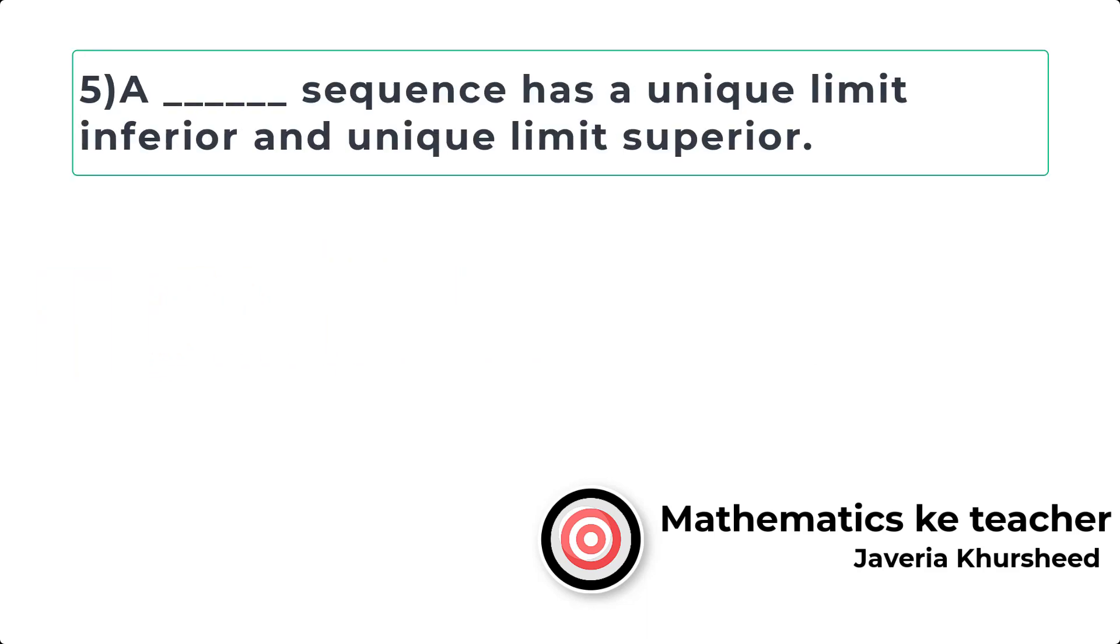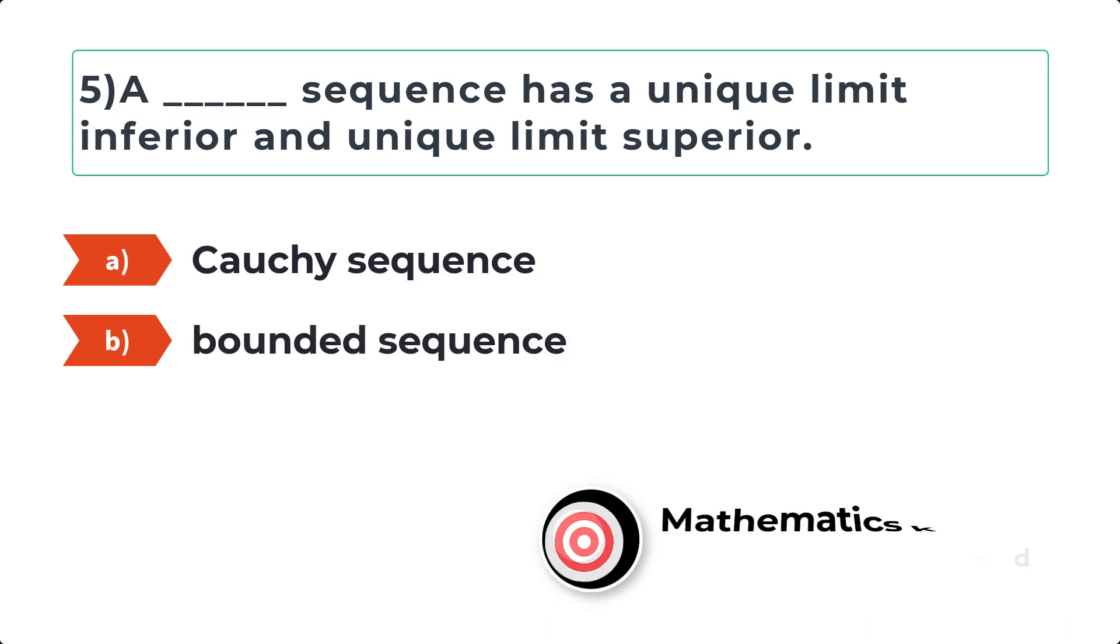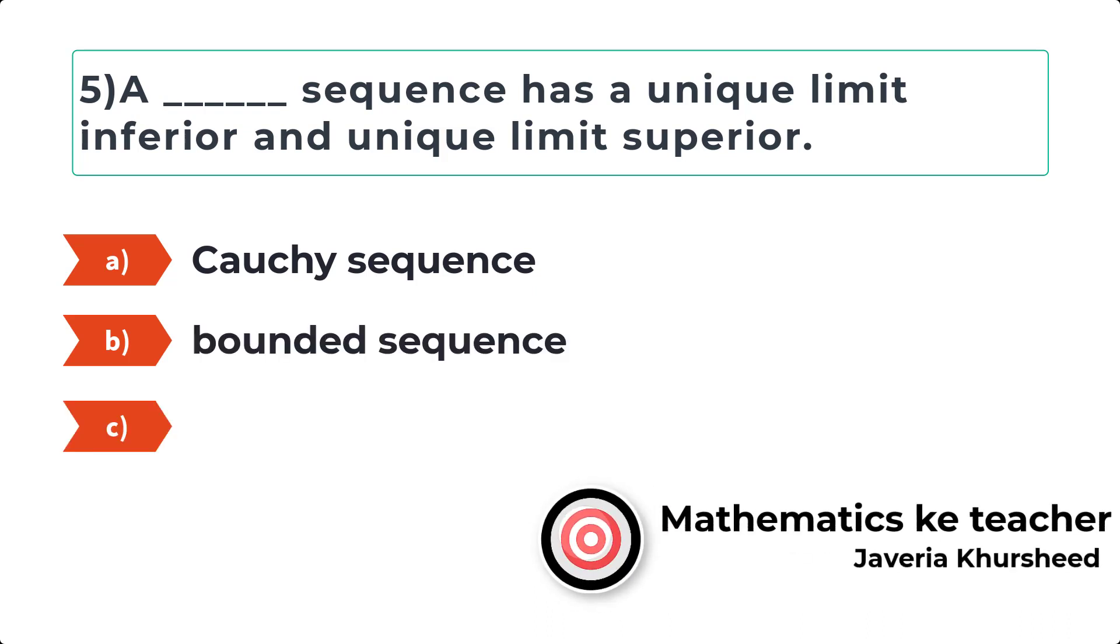Question 5: A sequence has a unique limit inferior and unique limit superior: A) Cauchy sequence, B) Bounded sequence, C) Unbounded sequence, D) None of these.